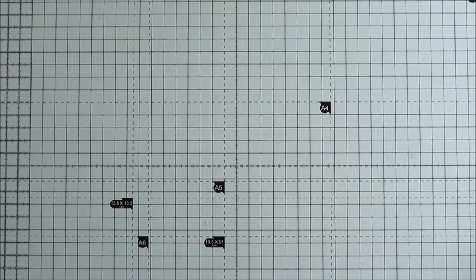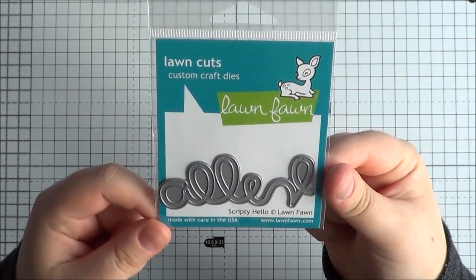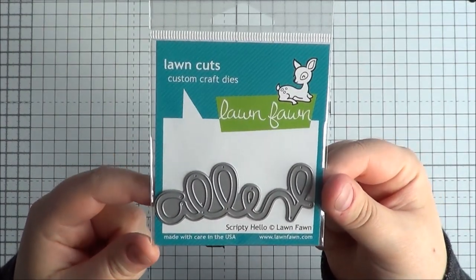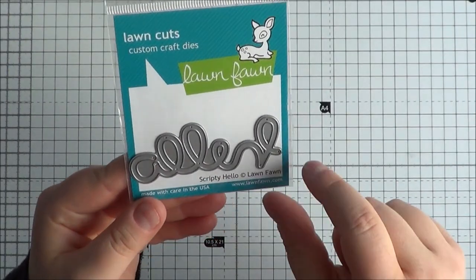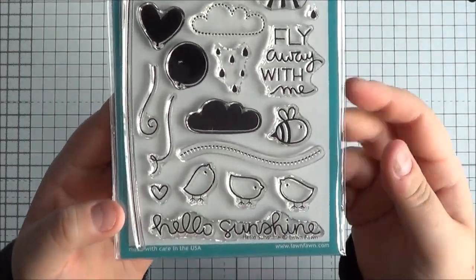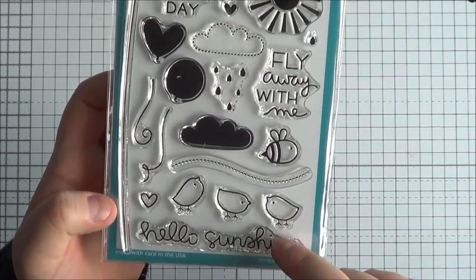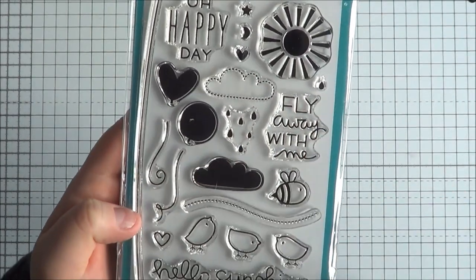And then I did get the Scripty Hello die and I have used this on a card that's on my blog now. Just again, I really like it. I love the Scripty kind of font as well. Just really pretty. Then I got the Hello Sunshine set as well. I just thought it was really cute with these little birds. And then you've got the cloud and the sun and some balloons as well.